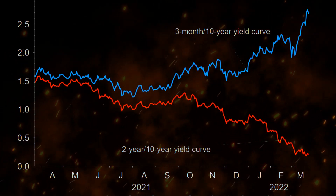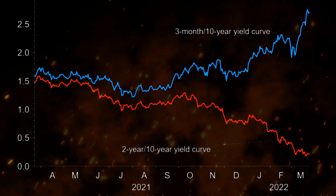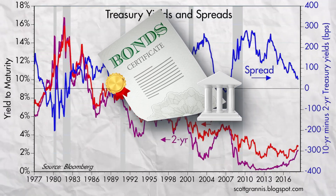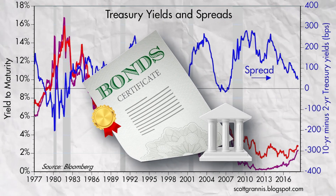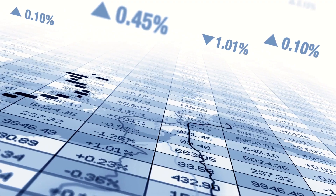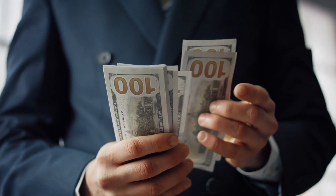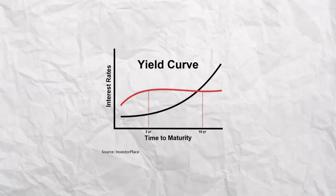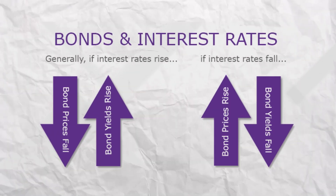Normally, this curve slopes upward, meaning short-term bonds, like three-month or two-year treasuries, have lower interest rates, while long-term bonds, like 10-year or 30-year treasuries, have higher interest rates. But why does this happen? Lending for longer carries more risk — inflation, interest rates, and the economy can change. To offset this, investors demand higher returns, making long-term bonds yield more. This typically creates an upward-sloping yield curve, but when it flips, something unusual is happening.